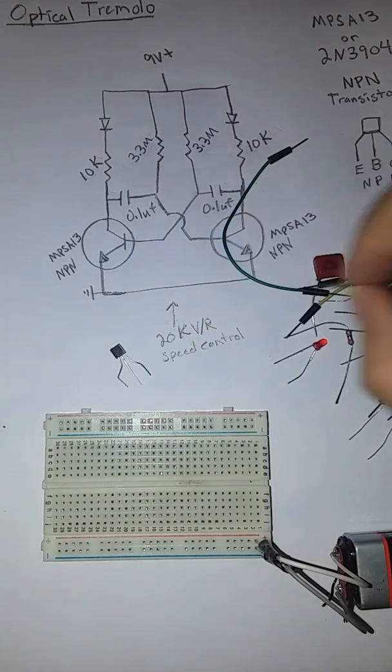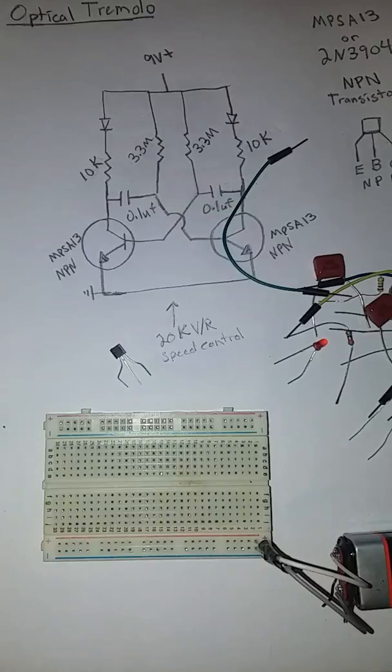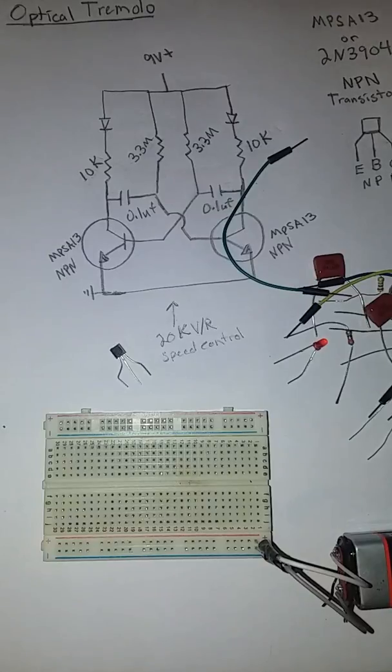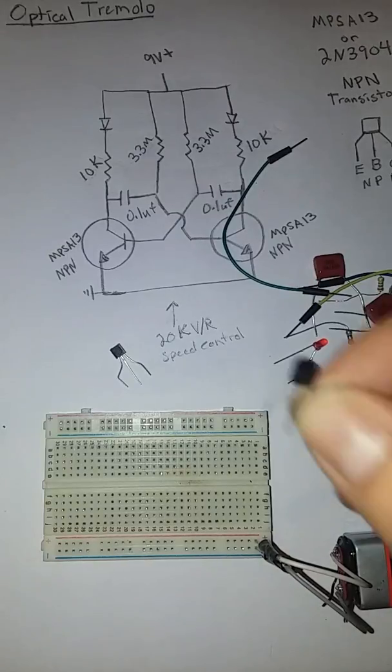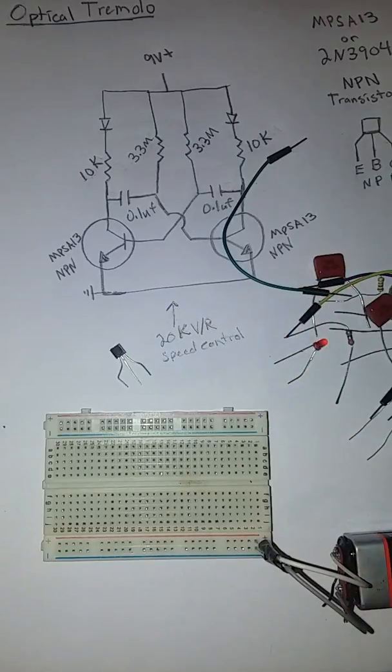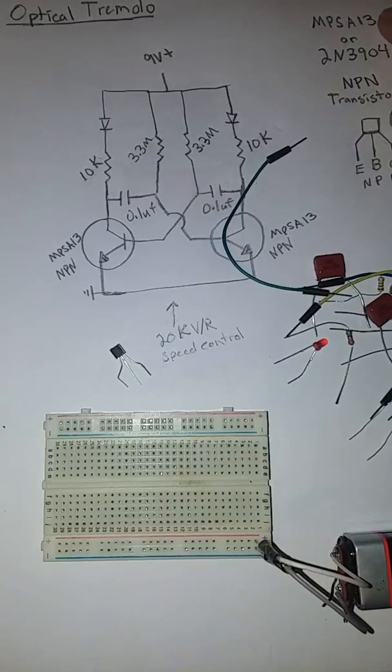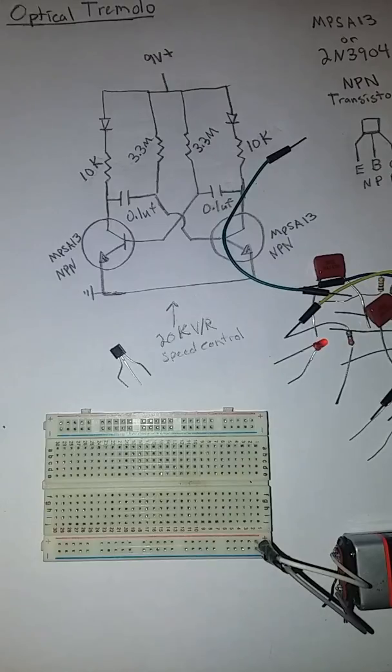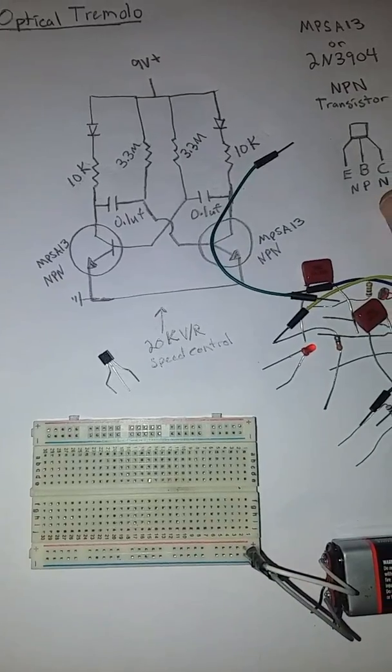First thing you have to do to make an optical tremolo is to make a flashing light circuit. We're going to do that using two of these NPN transistors. These are NPSA13 is actually what I used. You can also use a 2N3904 or probably just about any NPN transistor.